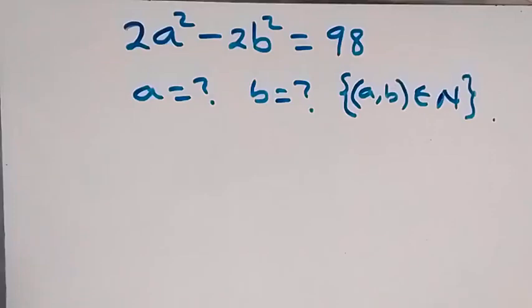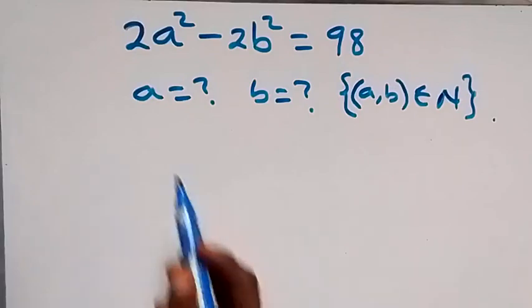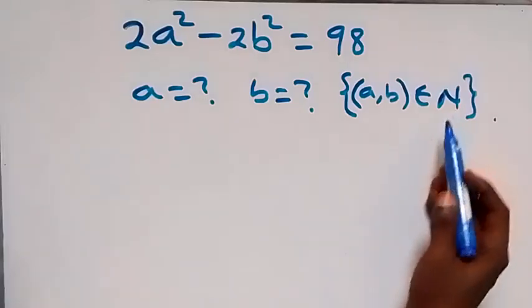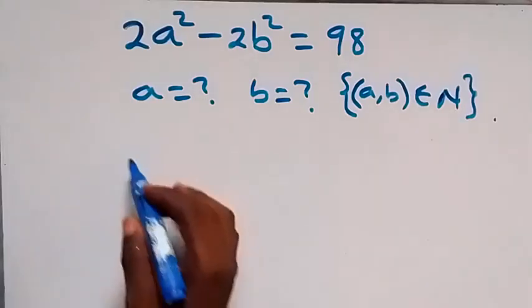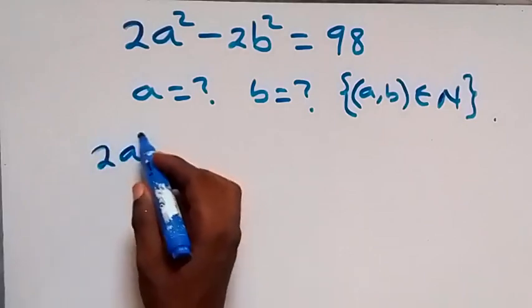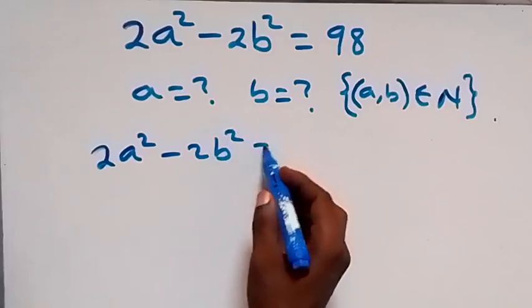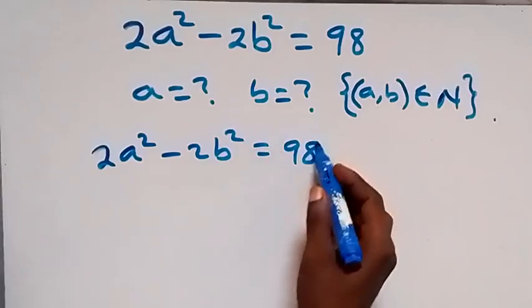Hello, you are welcome. How to solve this nice algebra equation: we have 2 times a squared minus 2 times b squared equals 98. We want to find the value of a and b such that a and b are members of the natural numbers. So we have 2a² - 2b² = 98.